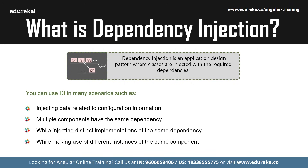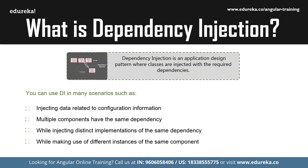Some scenarios include when you have to inject configuration information such as URLs, drivers, usernames, passwords, etc. Also when multiple components have the same dependency, or when you need to inject distinct implementations of the same dependency into one or more components, or when you have to make use of different instances of the same component with distinct configurations. It is not always necessary to use DI — if your application will never require different implementations or configurations, you can simply skip dependency injection.